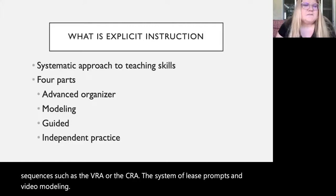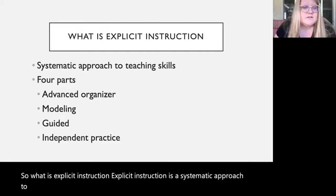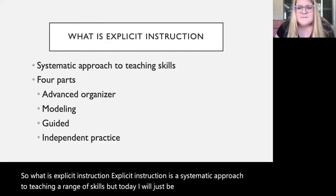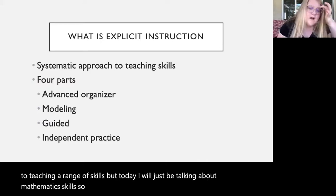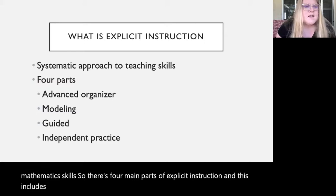So, what is explicit instruction? Explicit instruction is a systematic approach to teaching a range of skills, but today I will just be talking about mathematics skills. There are four main parts of explicit instruction, and this includes an advanced organizer, modeling, guided, and independent practice.